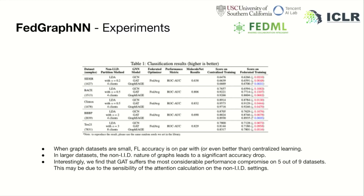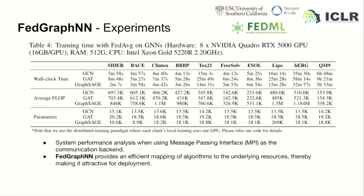Hence, there is a need to understand the nuances of training GNNs in a federated setting and bridge this gap. For system performance analysis, we utilize MPI as a communication backend. In large datasets, federated learning and training can be completed under one hour using only 4 GPUs, except the QM9 dataset, which requires hours to finish training. Training time using RPC is also relevant, but it is similar to that of using MPI.